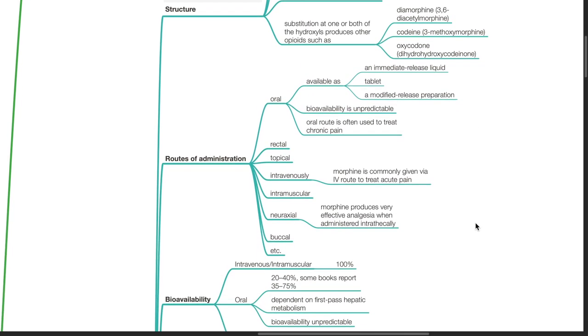Routes of administration of morphine. Oral, rectal, topical, intravenous, intramuscular, neuraxial, buccal, etc.